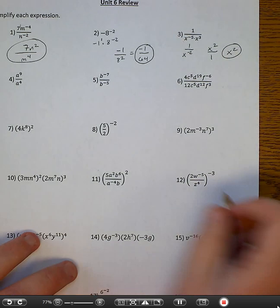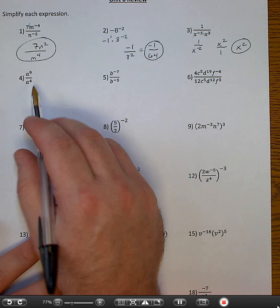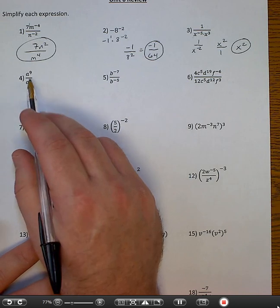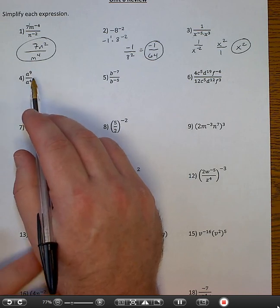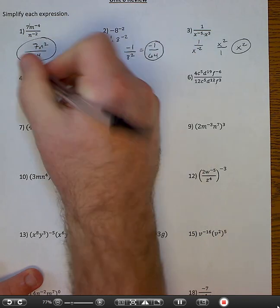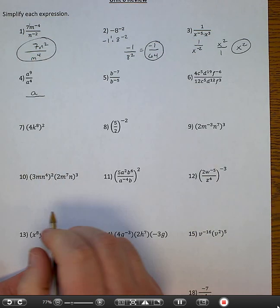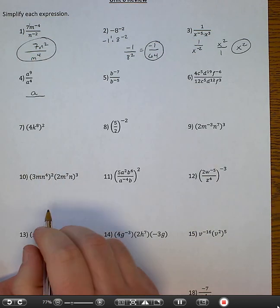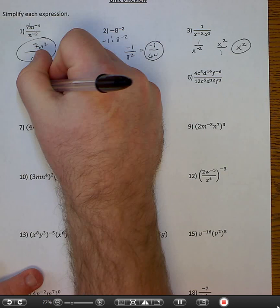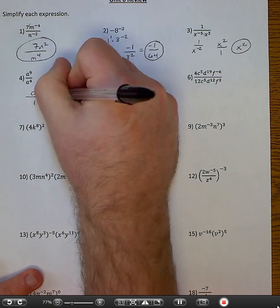Number four. Division here. You can subtract nine minus four and say a to the fifth. But think of it this way: where are there more a's? It's a fraction — there's more a's on top. So I'm going to put an a on the top. There are five more a's on top, so a to the fifth over one, or just a to the fifth.